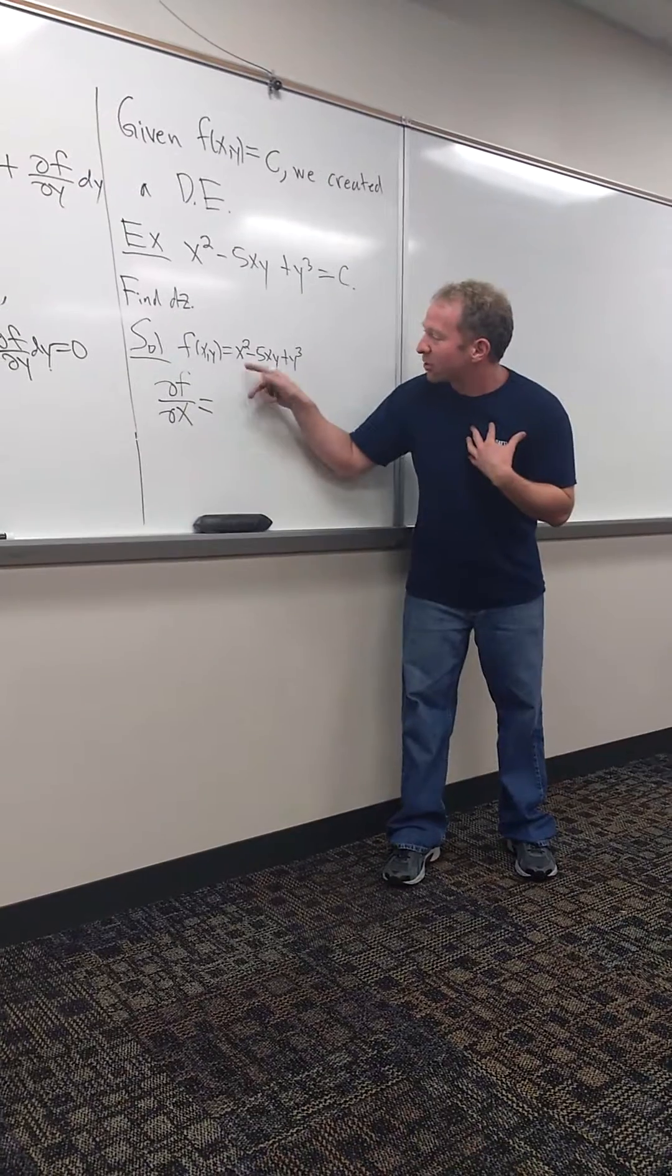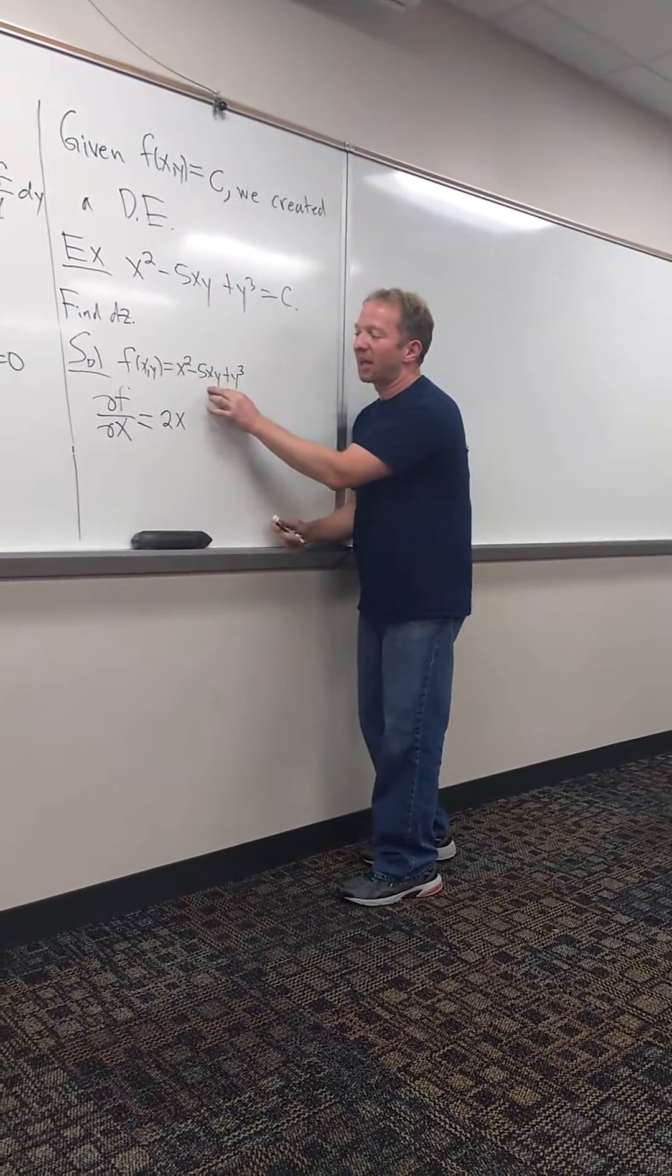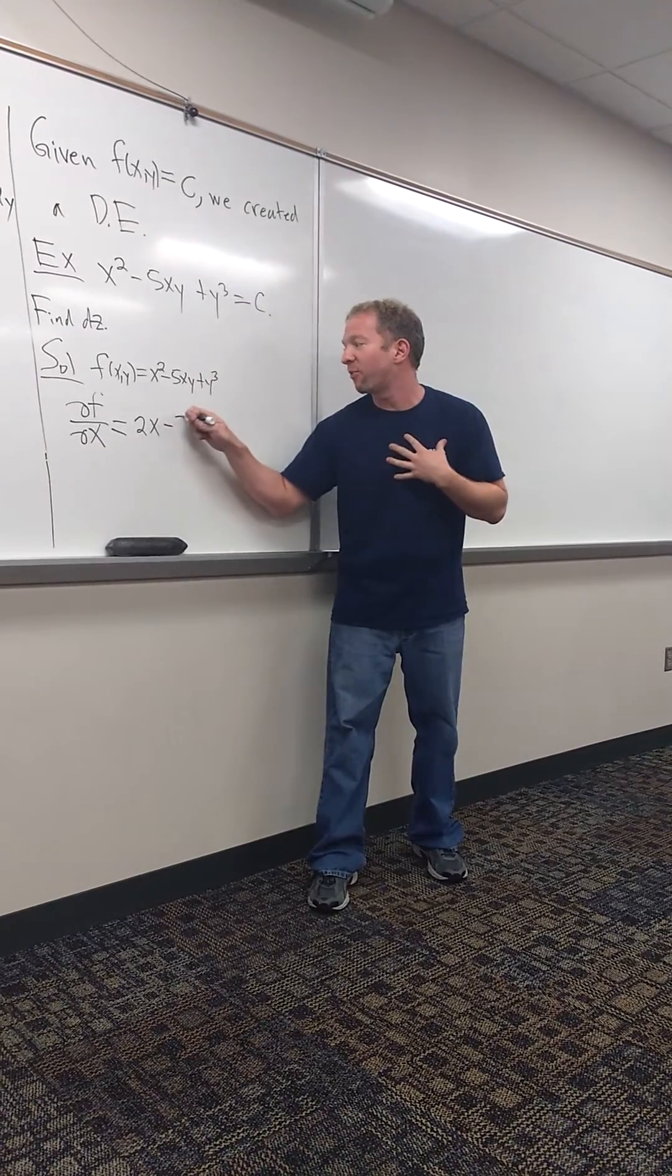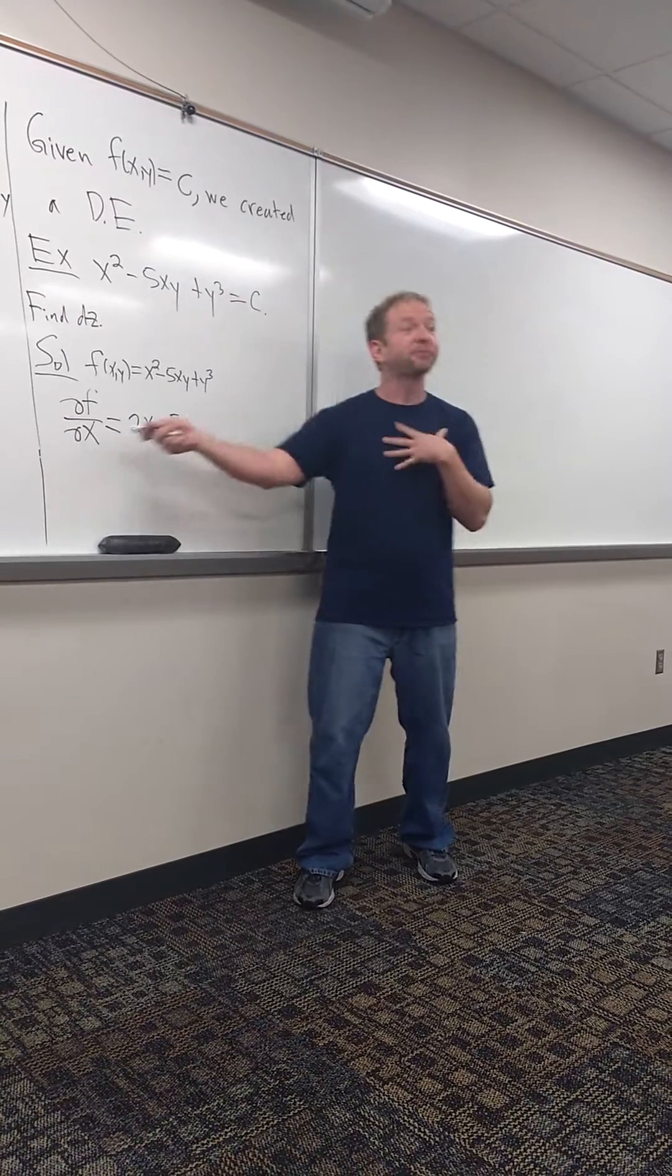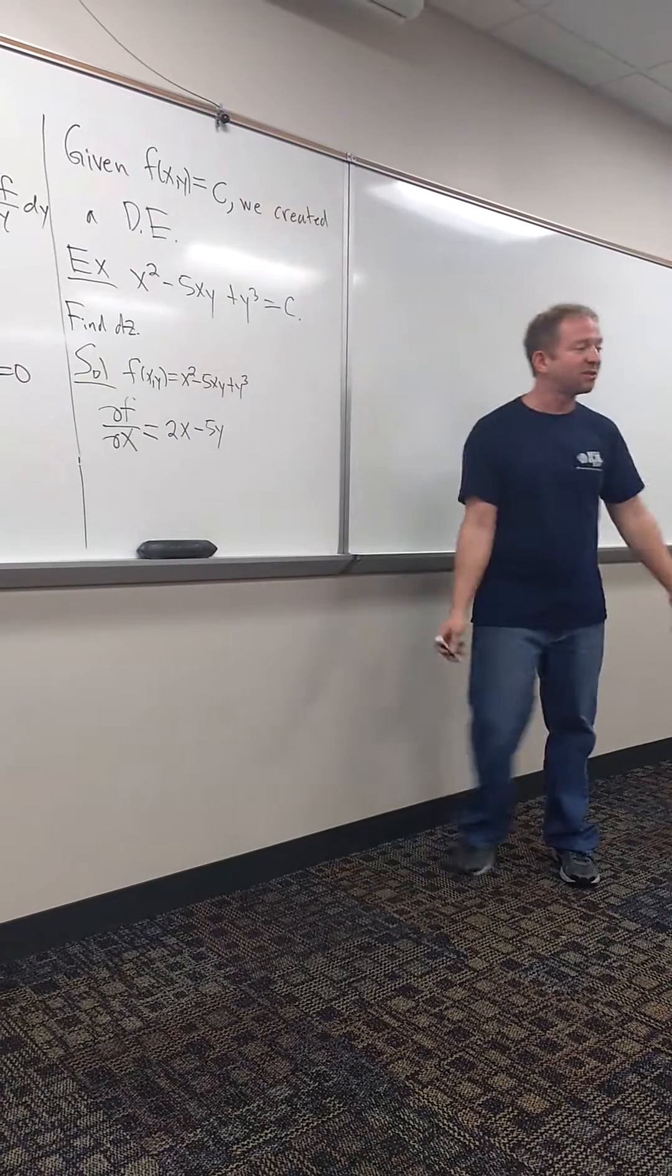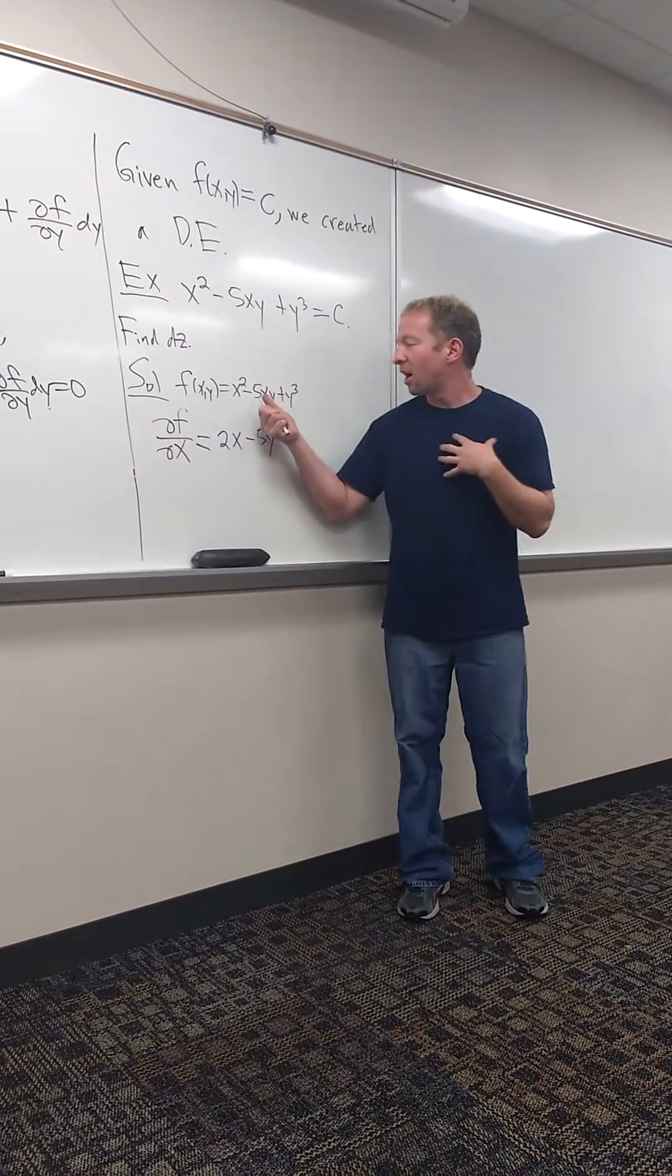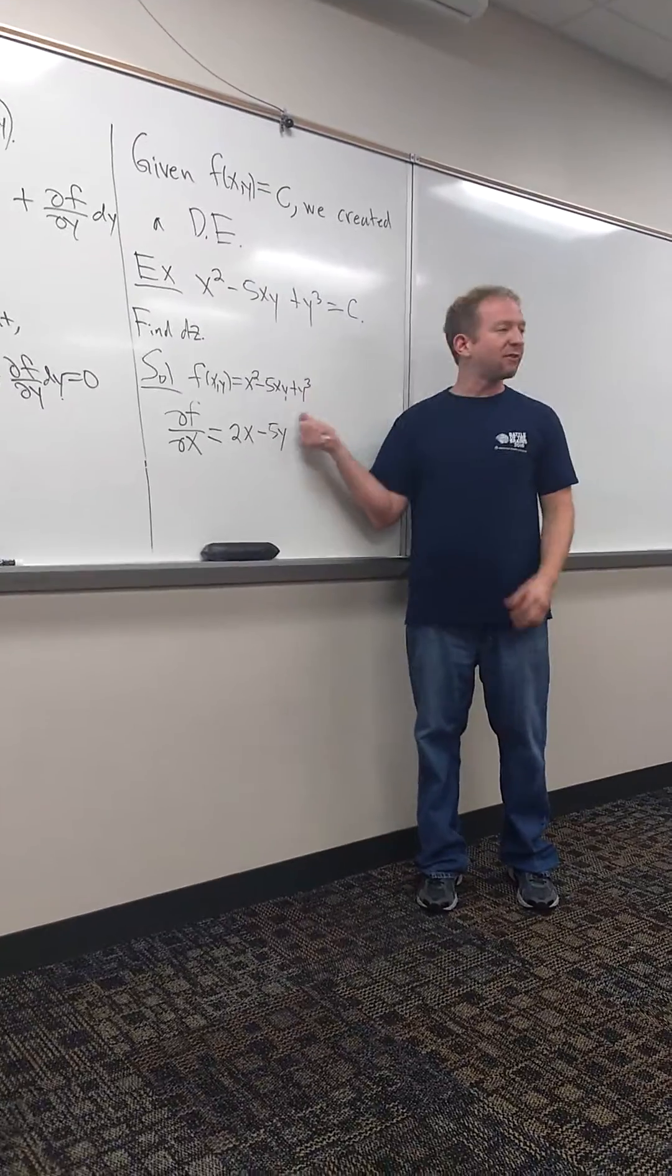So the derivative of x squared is 2x. And what's the derivative of 5xy? 5y. 5y. 5y. Are constants. Minus 5y. And what's the derivative of y cubed? Zero. Right? Because the derivative is with respect to x. So y cubed is a constant. So it's funky. If you're not used to it, it takes some time to get used to. So 2x. Five and the y are both constants, so it's just the derivative of x is 1. So you just get negative 5y. And the derivative of this is zero.